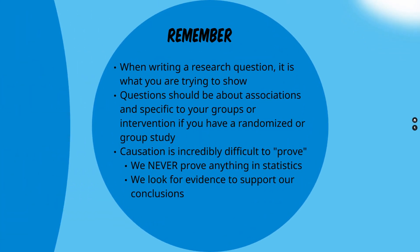When writing a research question, this is what you are trying to show — for example, is age associated with blood pressure? Questions need to be about associations and specific to your groups or intervention if you have a randomized or group study. Causation is incredibly difficult to prove. In fact, we never prove anything in statistics — we bring evidence to make a conclusion.